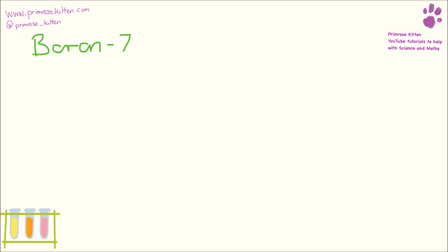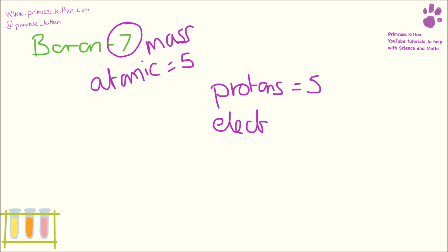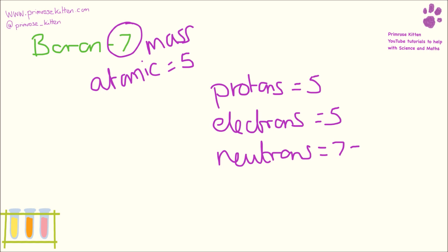Here we have Boron-7. The mass is 7. The atomic number from the periodic table is 5, so the number of protons equals 5, the number of electrons equals 5, and the number of neutrons equals 7 minus 5, which equals 2.